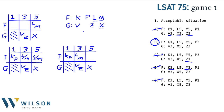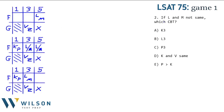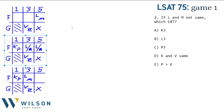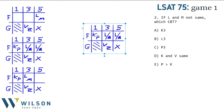Question two asks: if L and M do not get the same bonus, which of the following could be true? This puts us in world two, where one of them gets $3,000 and the other gets $5,000. Can K be $3,000? No, K gets $1,000.